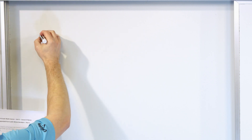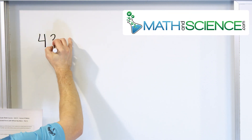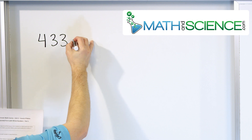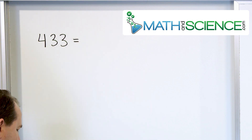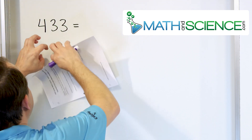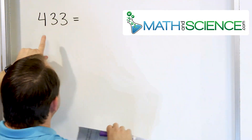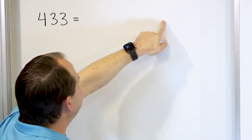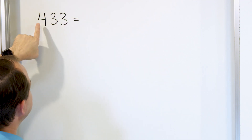Let's take our first problem. Let's say we have the number 433 and we want to write it in expanded form. When we say expanded form, what we mean is we want to take this number and blow it up so that we write down the value of each digit.